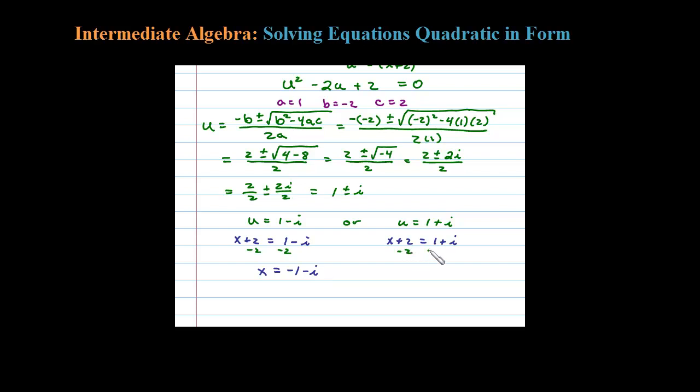For the other solution, subtracting 2, I'm left with x equals -1 plus i. So two solutions here: -1 plus or minus i. That's how you do it using substitution.